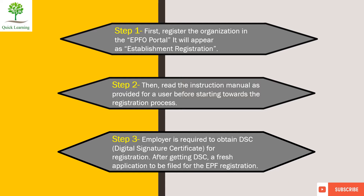If the employer is already registered, you can log in with the universal account number and password. This instruction explains the process of DSC — Digital Signature Certificate of the Employer. After DSC, you will need to fill the application for EPF registration.